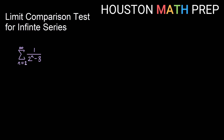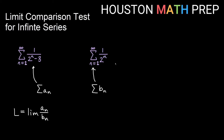Here we have the sum of one over two to the n minus three. This is what I'm trying to decide converges or diverges — this is my sum of a sub n. If I think of a simpler version that looks like this, I might just choose the sum of one over two to the n, which is a geometric series with ratio one half. So we set up the limit of my a sub n terms over my b sub n terms: one over two to the n minus three over one over two to the n. Multiplying by the reciprocal gives us the limit of two to the n over two to the n minus three. You can also use L'Hôpital's rule one time, and the limit here is going to be one.